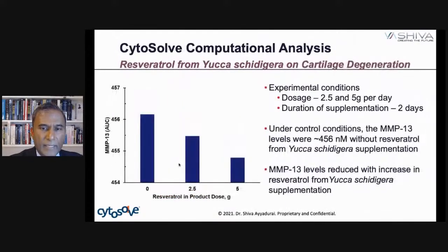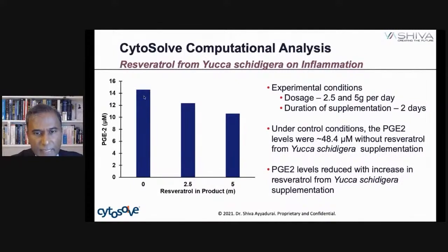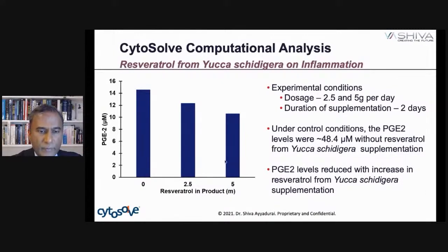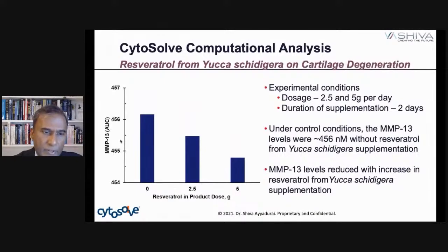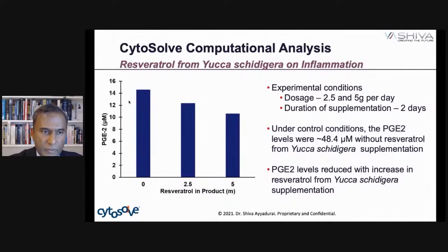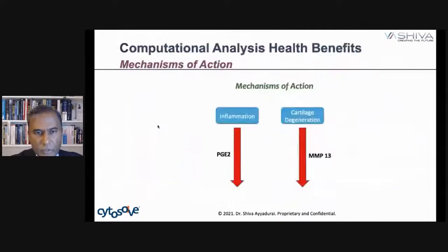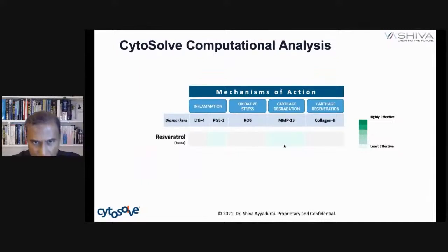We then mathematically modeled it. We took PGE2 — the bad molecule — and as we add more and more yucca containing resveratrol, it drops from 15 nanomolar down to around 10, so it really helps reduce inflammation. When we look at MMP-13, it went from around 456 down to 455 — so cartilage degeneration is reduced only moderately. The PGE2 drop shows almost a 40% reduction, while MMP-13 shows about a 1% reduction. Our conclusion is that yucca definitely helps in both inflammation and cartilage degeneration, but it really excels at reducing inflammation.